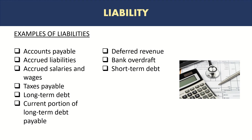Deferred revenue is the amount received from customers in advance where the service or product the company needs to provide has not yet been delivered. It is considered a liability because the company must settle it by providing what was promised. Bank overdrafts — any overdraft facility received from a bank — are also a liability, as is any short-term debt, similar to long-term debt.